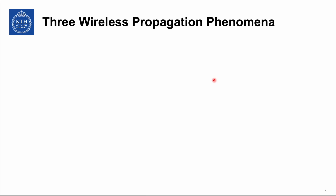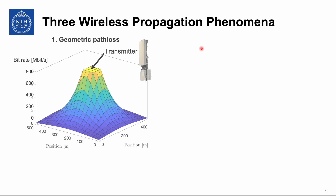What about wireless propagation between the transmitter and the receiver? There are three important phenomena. The first one is known as geometric path loss: signals spread out in different directions and become thinner and thinner in each direction.